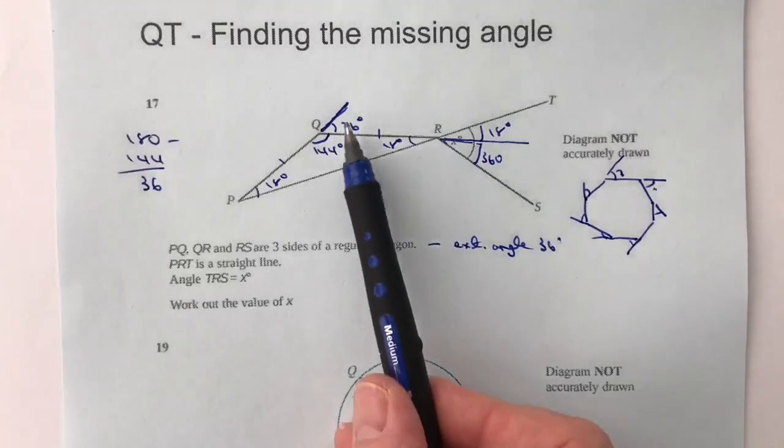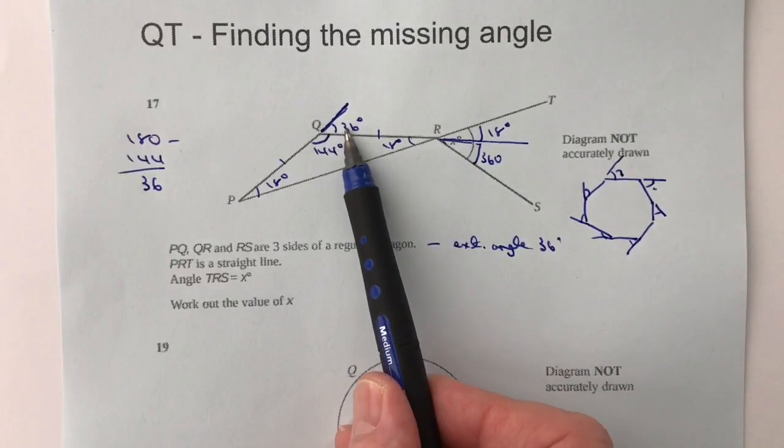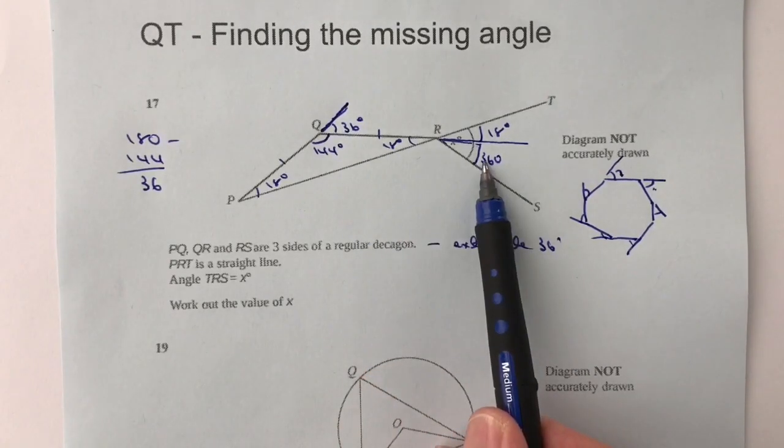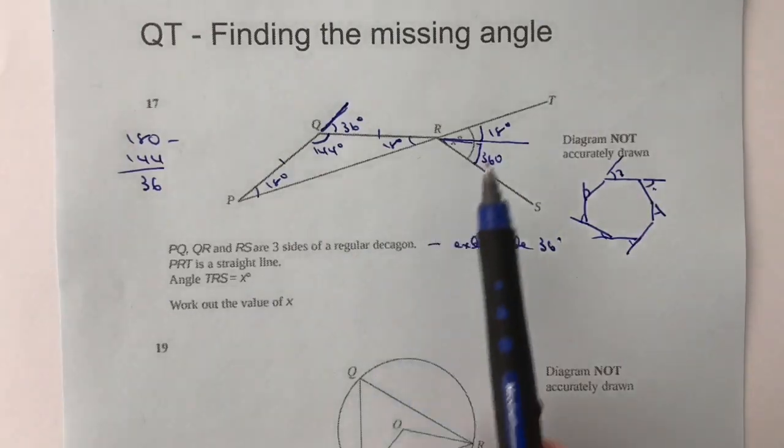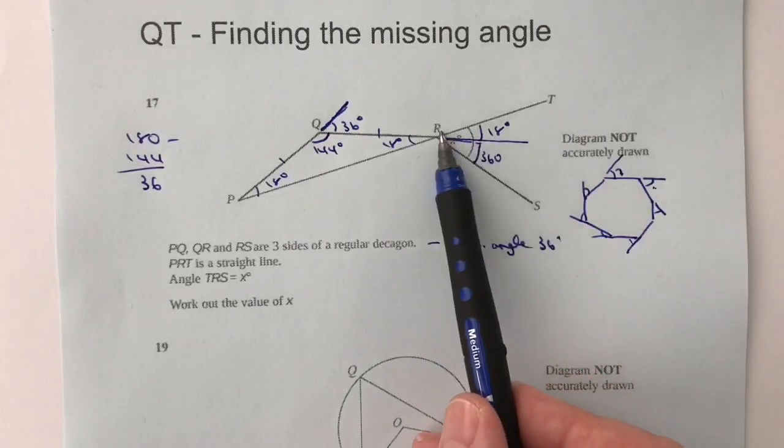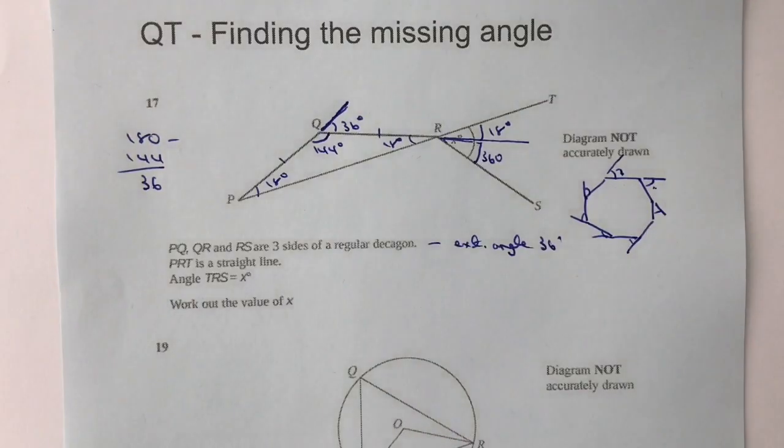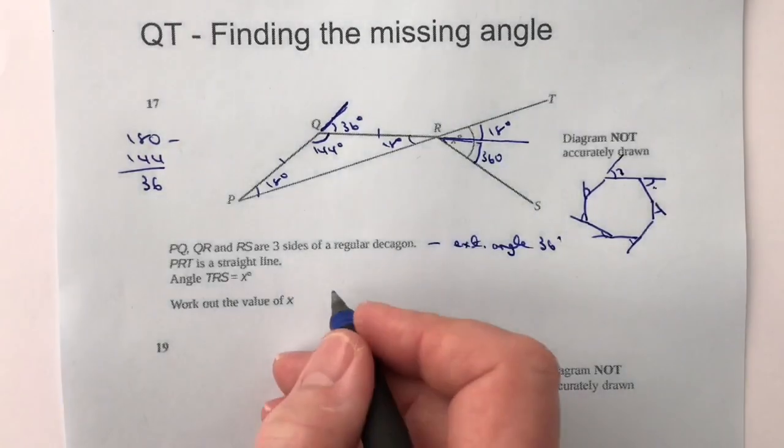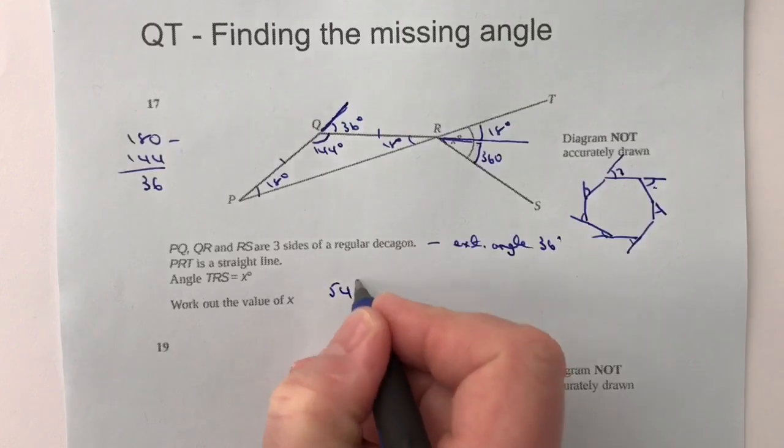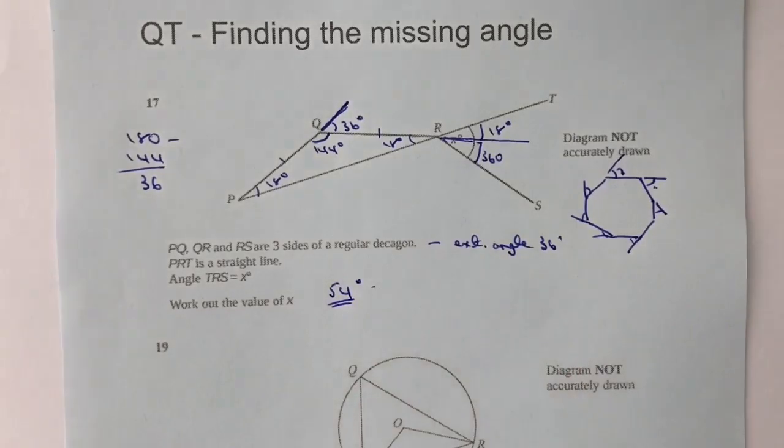So if I want to work out the angle TRS, it's going to be 18 plus 36, which is going to be 54 degrees. Okay, so a little bit tricky to start off with, but hopefully you've been able to grasp that one okay.